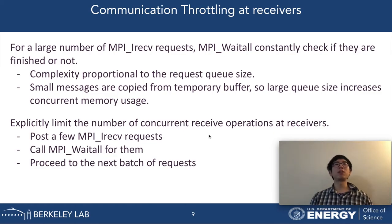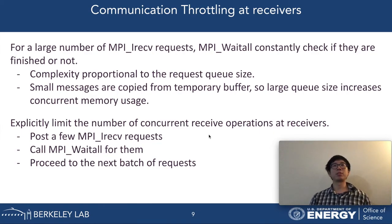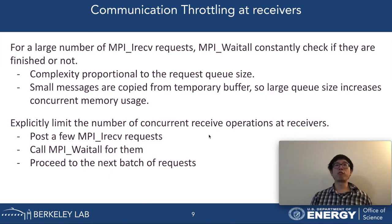Communication throttling is also important for avoiding communication contentions. Having a lot of iReceive requests posted concurrently can increase temporary memory usage at a receiver, and we also spend a lot of time checking whether the MPI_Waitall function has completed. We explicitly limit the number of MPI iReceive requests posted in a single MPI_Waitall operation. When a receiver has to receive from a large number of senders, we divide the asynchronous MPI requests into multiple batches, and MPI_Waitall is called for one batch after another.